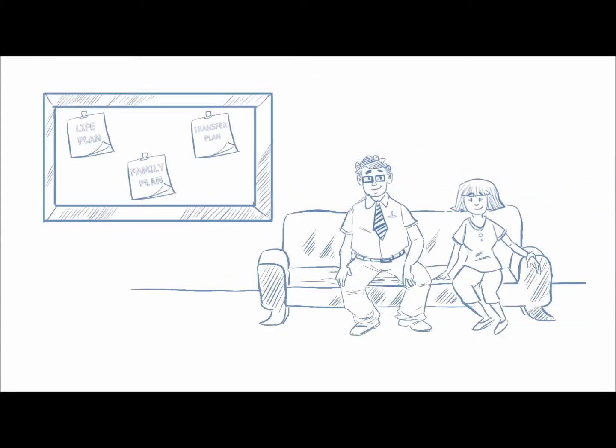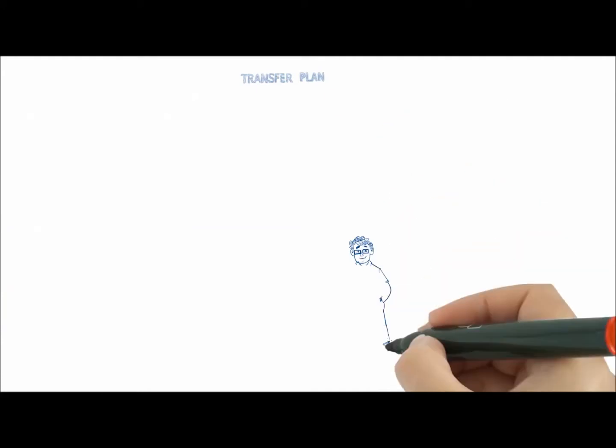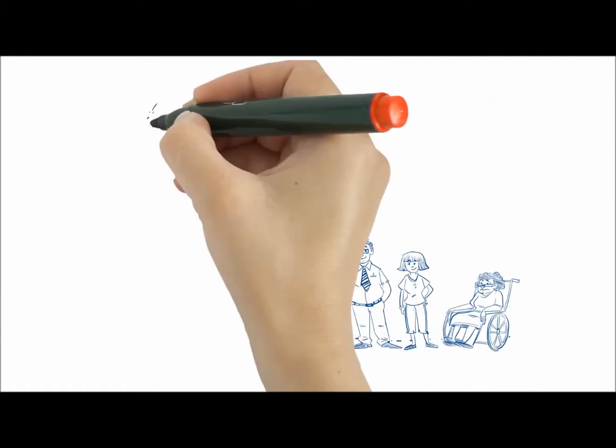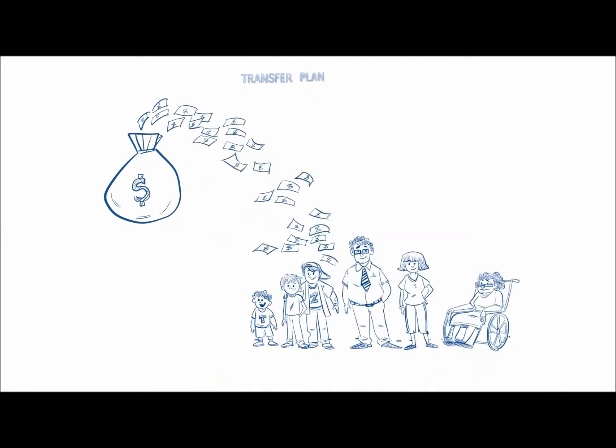It should include a transfer plan to prevent tax liability and avoid probate costs and spending down of assets, ultimately leaving property to where it needs to go.